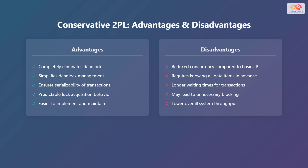Conservative two-phase locking has several advantages: it completely eliminates deadlocks, simplifies deadlock management, ensures serializability of transactions, provides predictable lock acquisition behavior, and is easier to implement and maintain. However, it also has disadvantages, including reduced concurrency compared to basic two-phase locking, requiring knowledge of all data items in advance, longer waiting times for transactions, potential for unnecessary blocking, and lower overall system throughput.